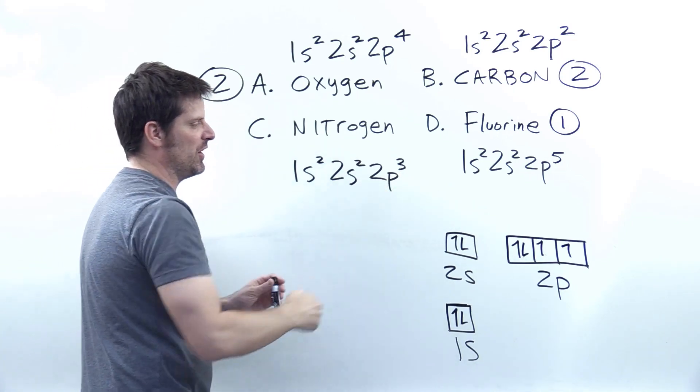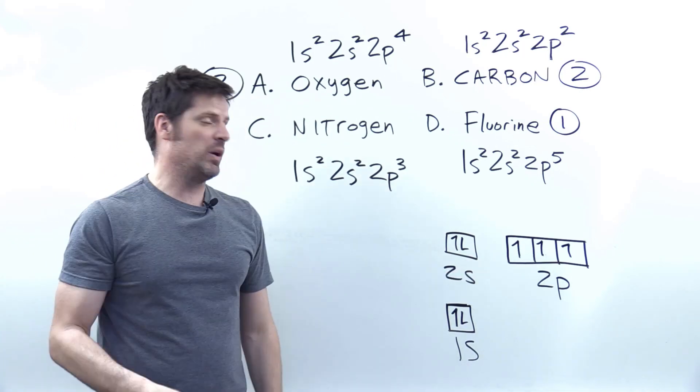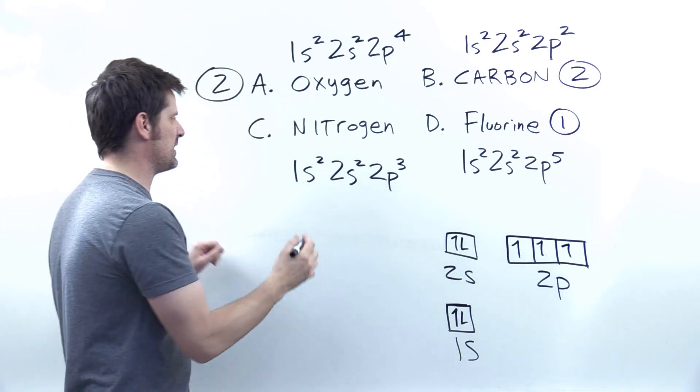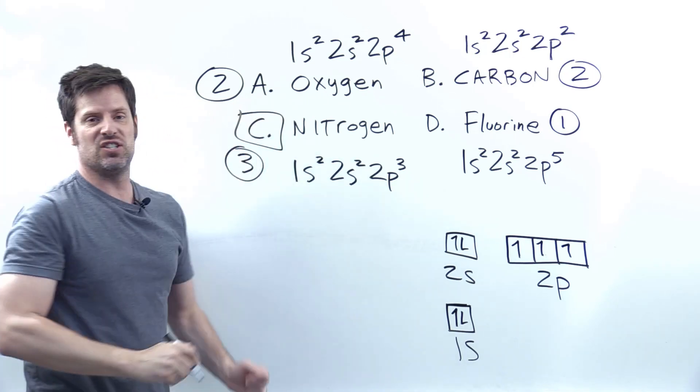This leaves me then with nitrogen, with its three electrons filling its 2p shell. If you go through the analogous process, you can see its diagram should look like that, which is, of course, three unpaired electrons for nitrogen, and therefore makes this question's correct answer option, C.